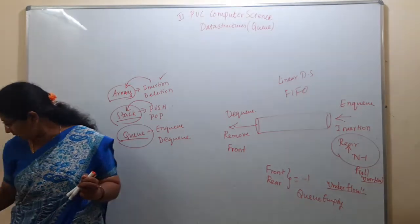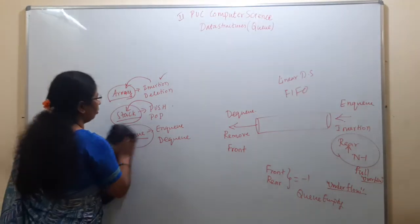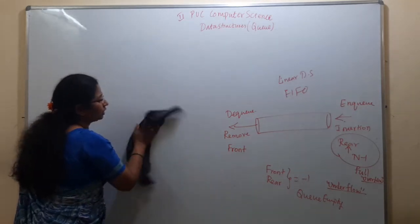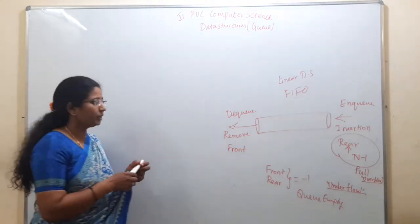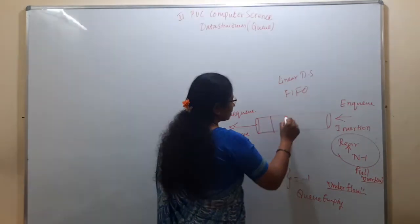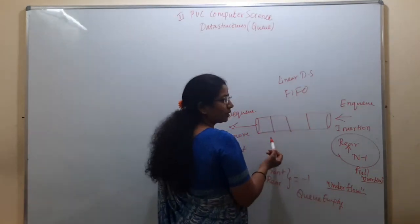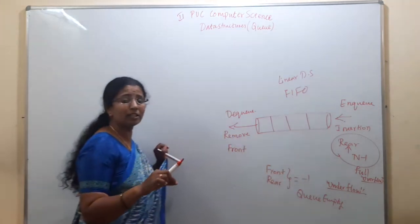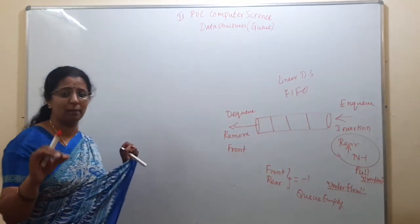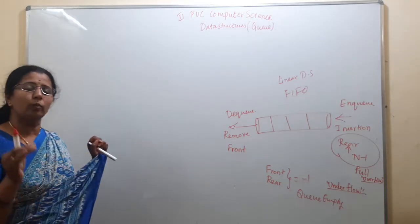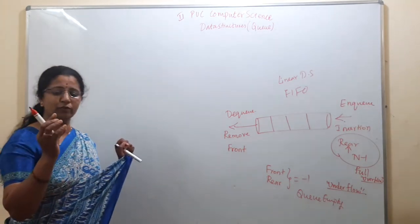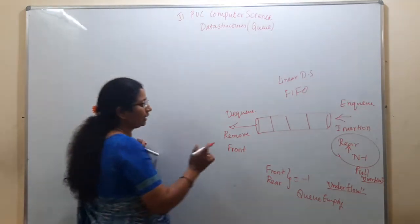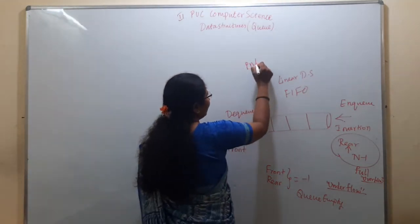Depending on the data structure, your marks will depend on which algorithm you write. If you write whichever you know without identifying the data structure, you will not get the marks. Queue and stack are both implemented with array data structure first. Once the concept of linked lists is completed, we will also write the implementation of stack and queue using linked list representation.